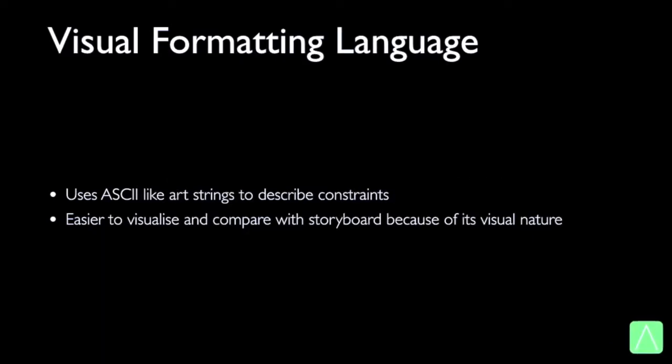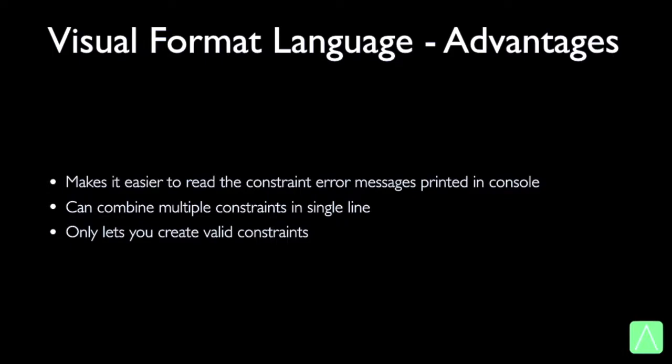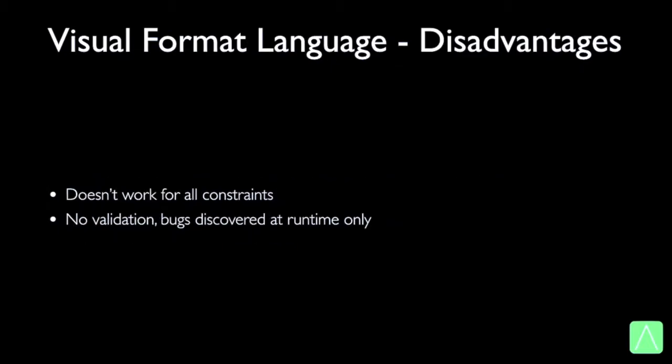The last option is to use visual format language. Unlike the other approaches, visual format language makes use of ASCII-like artwork to describe constraints, making the whole process easy to visualize and compare. The advantages are: it is easier to read error messages in the console because they are in a similar format; we can create multiple constraints in a single line; and we can only create valid constraints. However, there are some drawbacks: we cannot apply any kind of constraint we wish, and there is no validation of the constraint until runtime, meaning repeated runs of the code are needed to fix each constraint issue.